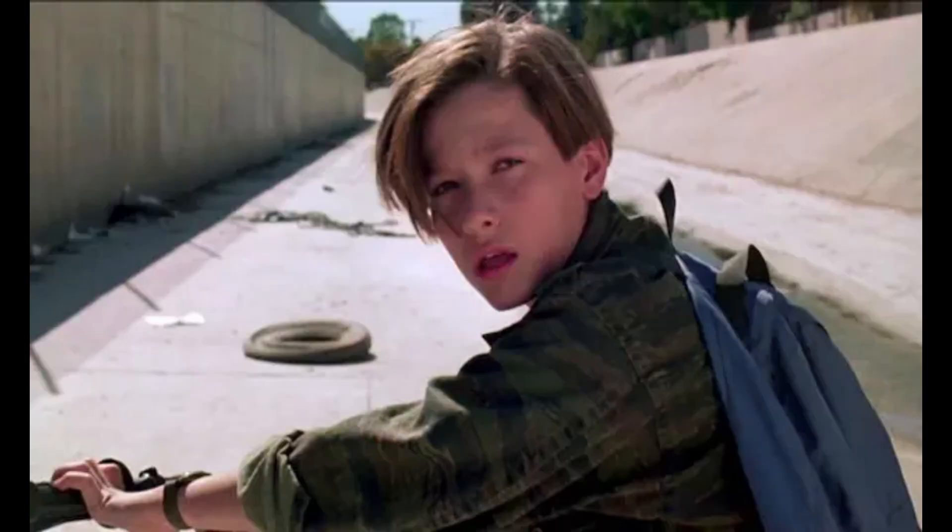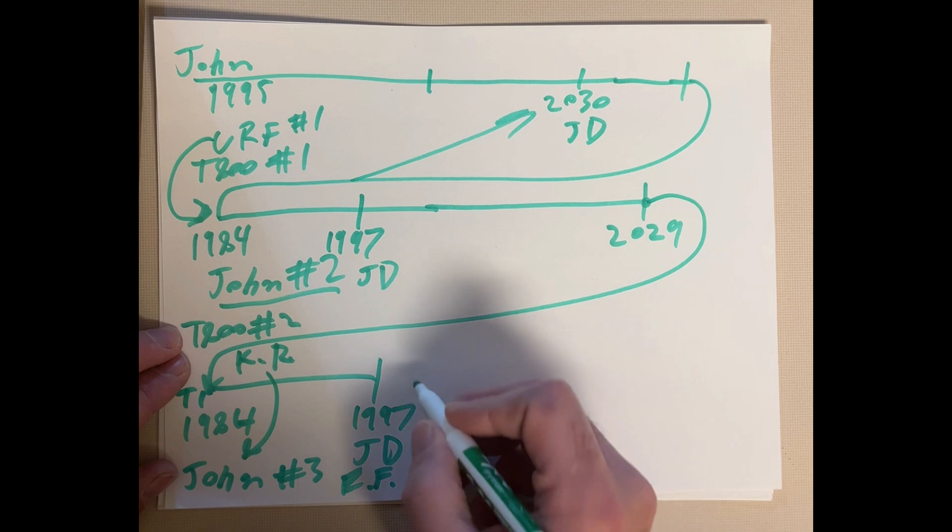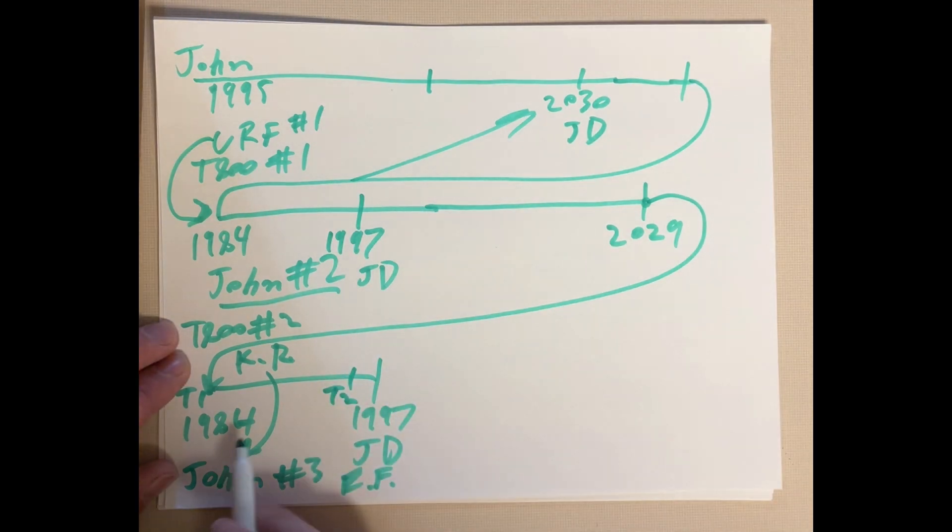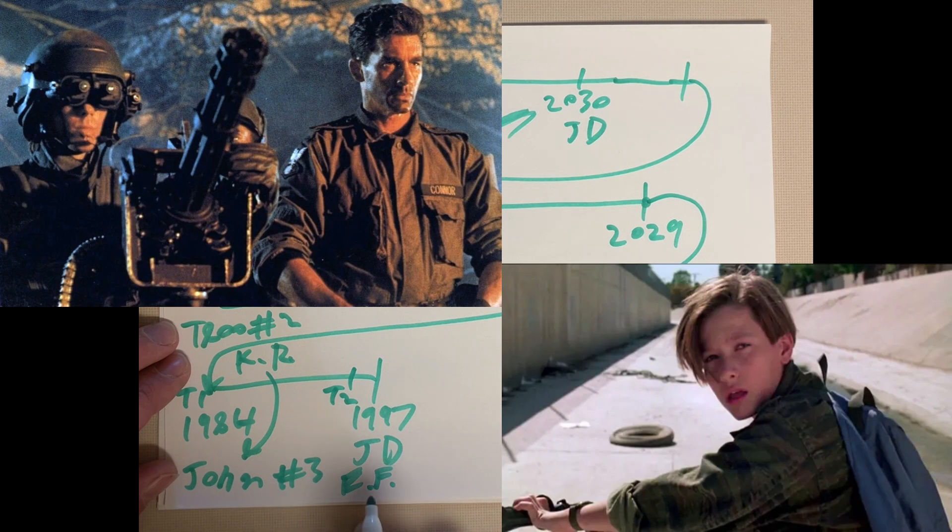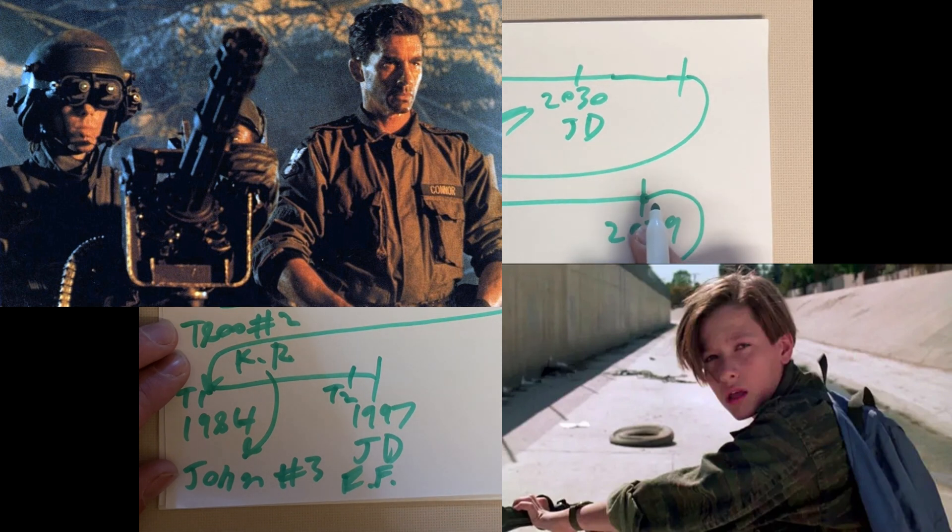So, this John number three is Edward Furlong. That's the John we see in T-2. So, this is T-1 that we know, and this is T-2 that we know. So, that's why Edward Furlong looks different than the actor that plays John Connor in the future scenes from T-2.